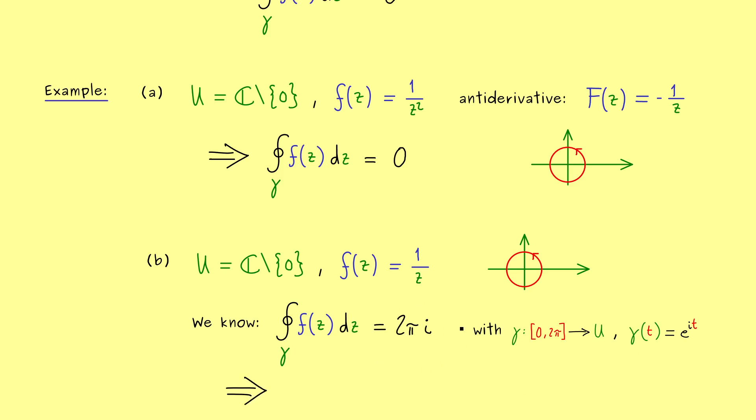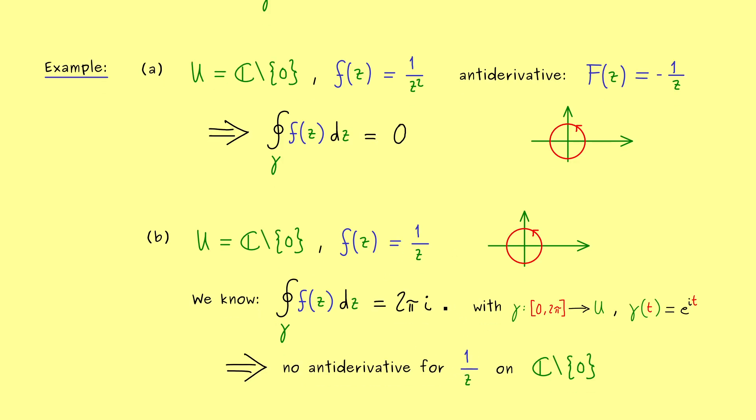Okay but now the important thing to note is that this 2πi is not zero. Hence this allows us to use a contraposition and to conclude that this function here 1 over z does not have an antiderivative on this domain.